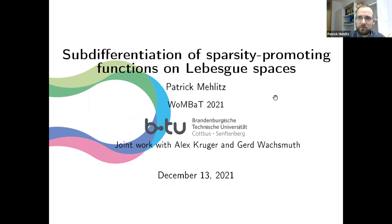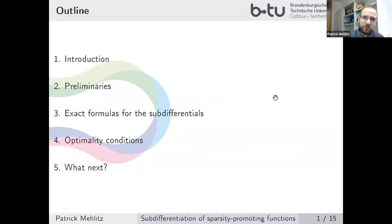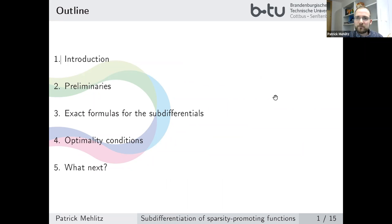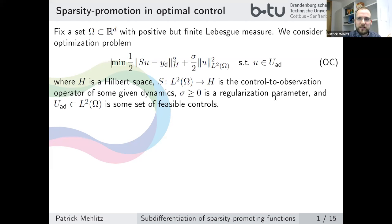First, I will introduce the topic of sparsity-promoting optimal control. Then I will cover basics in variational analysis and functional analysis in a preliminary section. In the third part I present the precise formulas for the subdifferentials of interest, then address optimality conditions, and finally a short 'what next' section will close the talk to visualize what we can do and what the open questions are.